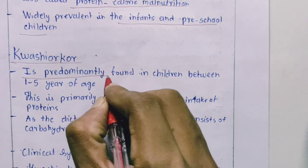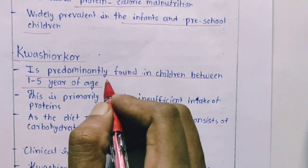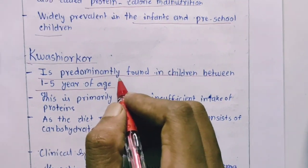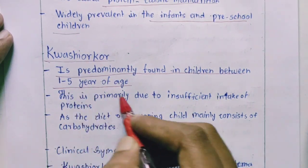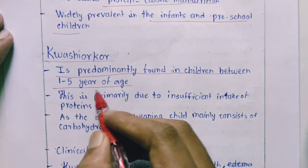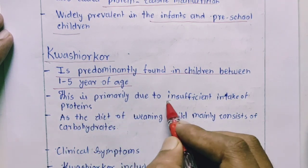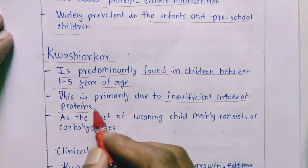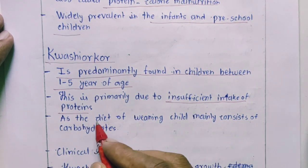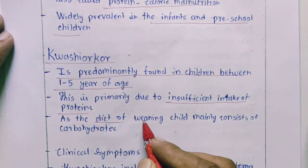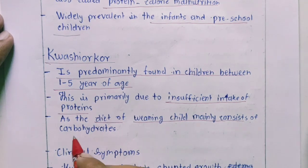Protein Energy Malnutrition is found in children between 1 to 5 years of age. It is primarily due to insufficient intake of proteins — this is a protein deficiency — as the diet of a weaning child mainly consists of carbohydrates.